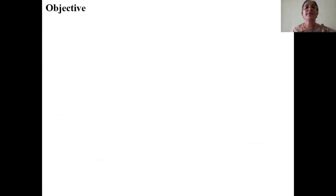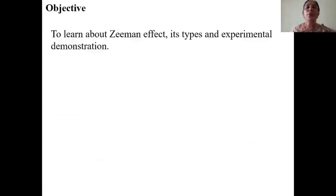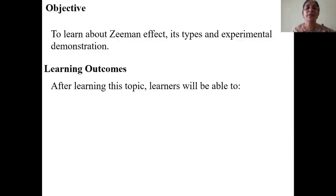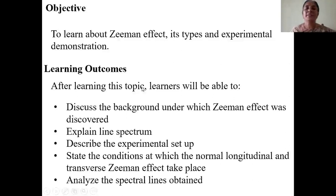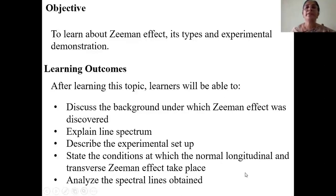The objective of today's talk is to facilitate you to learn about Zeeman effect, its types and its experimental demonstration, and also the quantum mechanical explanation of Zeeman effect. The learning outcomes will be that you will be able to discuss the background under which Zeeman effect was discovered, understand what is line spectrum, describe the experimental setup used by Zeeman, state the conditions at which normal longitudinal and transverse Zeeman effect take place, and analyze the spectral lines obtained.